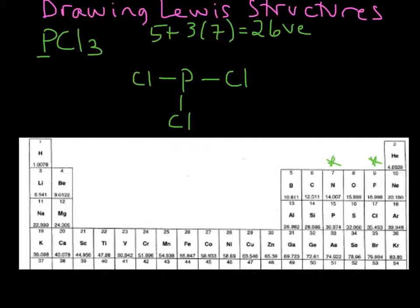Each of those bonds is worth two electrons. If we count up how many electrons we've used so far, we have three single bonds, so we've used six valence electrons.